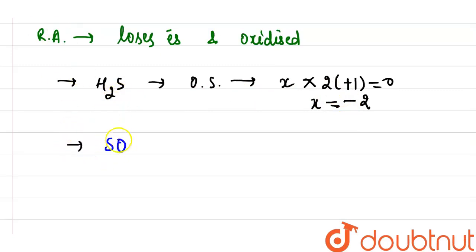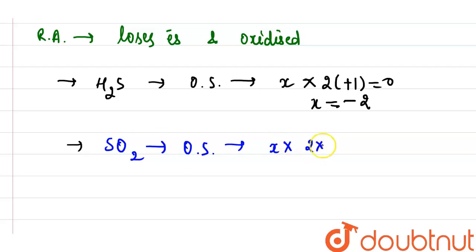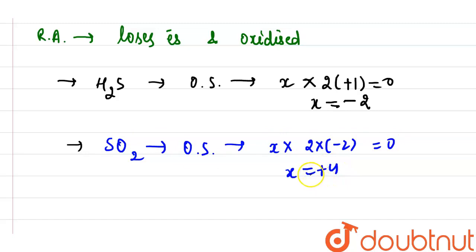Now let us look at sulfur dioxide. The oxidation state of sulfur in SO2 is x. We have: x + 2(-2) = 0, so x = +4. The oxidation state of sulfur in sulfur dioxide is +4.